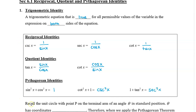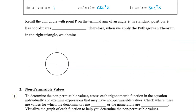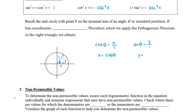I'm going to show you how the first one — sine squared x plus cos squared x equals 1 — comes about. Recall the unit circle with point P on the terminal arm of an angle theta in standard position. Let's place an angle in quadrant 1. The radius is 1 since it's a unit circle. We'll label this triangle x and y on the sides with an angle of theta.